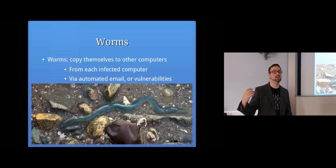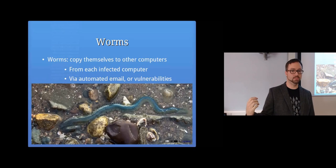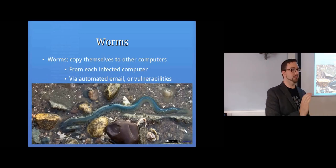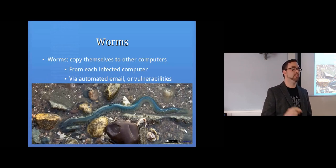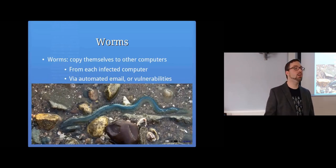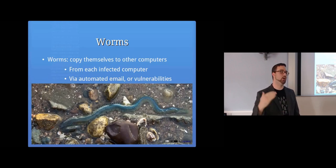A worm is malware that copies itself from one computer to another — it has some way of reaching another computer. One way is by sending spam emails: it looks at all your contact lists and sends an email to each person with an attachment. If the worm is clever enough in how it phrases it, it'll trick your friends into opening the attachment, which then infects their computers. Or it might be more sophisticated, scanning the network for vulnerable systems and exploiting those vulnerabilities to take control of a computer based on a programming mistake.